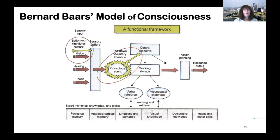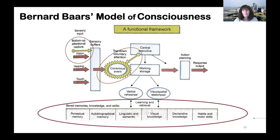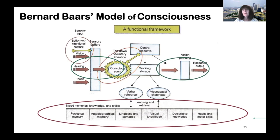Here's Baars' model of consciousness. At the center is working storage — our short-term memory on stage. At the bottom are many long-term memory processors — the audience. On the left, input from the outside world comes through sensors like vision, hearing, and touch. From working storage there's output to the outside world by way of action and actuators. In the middle is a central executive functioning as the stage manager.